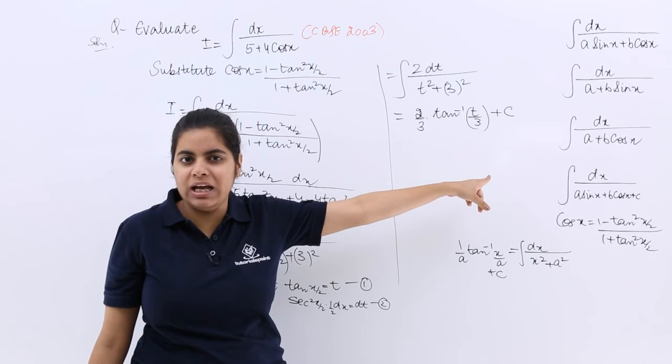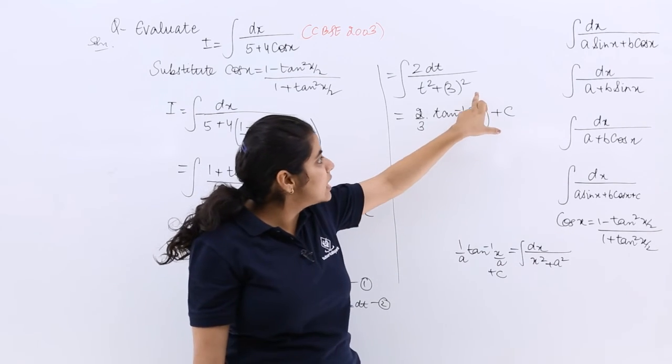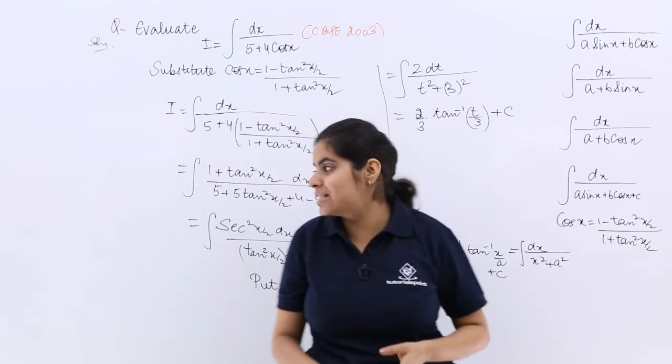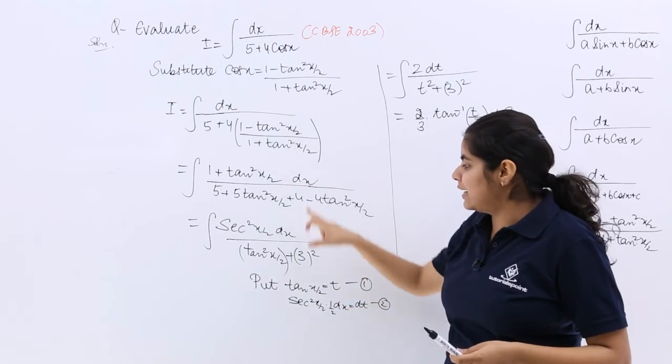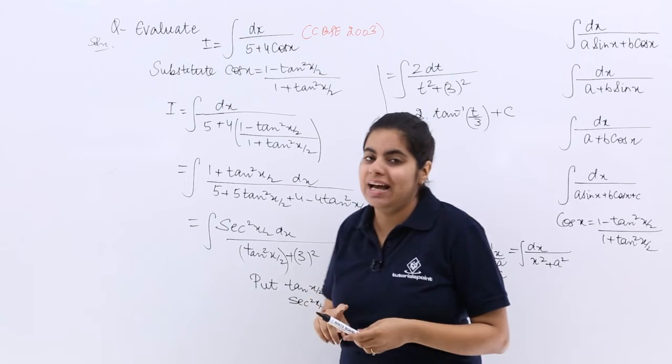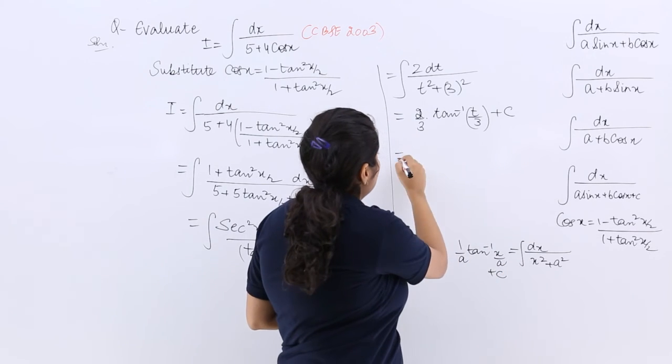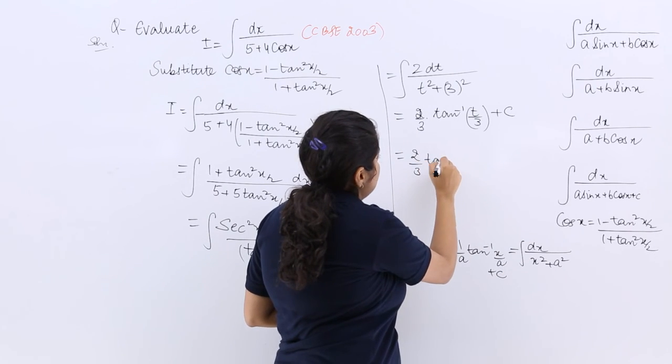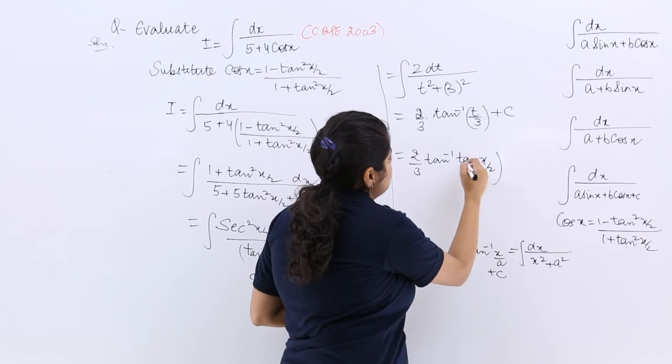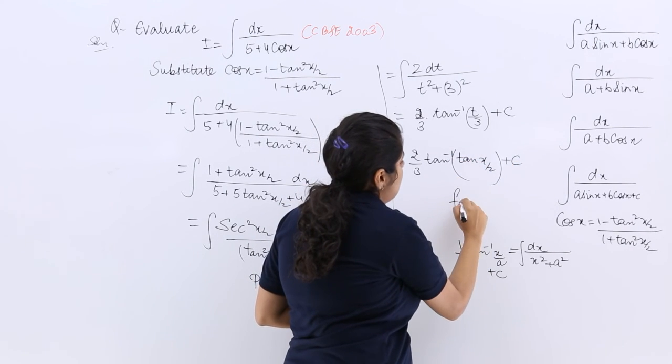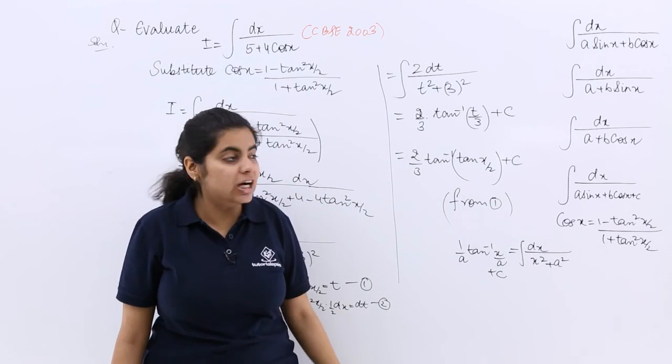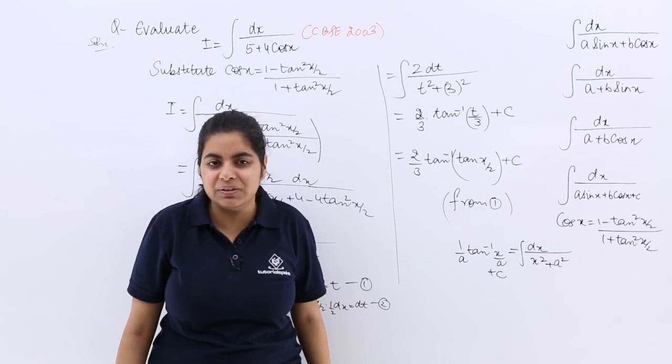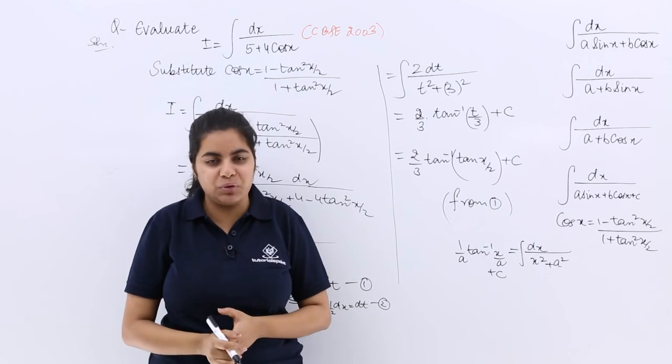Now, the same formula I have used. Can I leave my answer here? I cannot complete it because t should not be left in the answer. I should use x. So where is x? Tan(x/2) was t. So (2/3)tan⁻¹(tan(x/2)) + C. And that was from equation number 1. Either you can leave your answer till here or you can simplify one step further. So this is how you do this type of question.